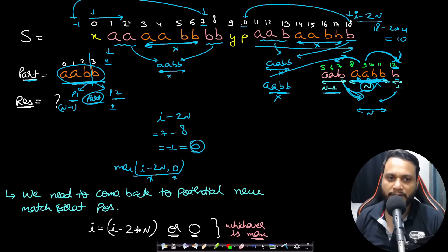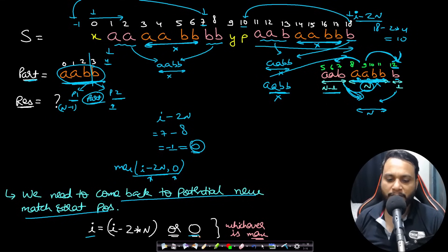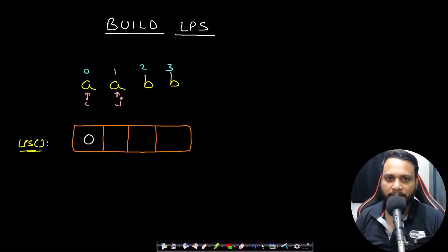So we need to come back to a potential new match start position, and that position i will be equals to the maximum of 0 and i - 2n. Before starting our pattern matching, we will recap building the LPS array.